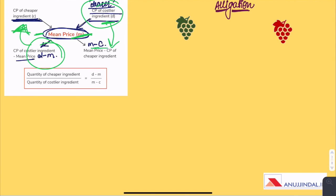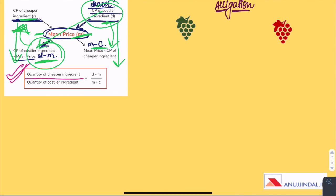Don't confuse it — we are writing D-M below the cheaper side and M-C below the costlier side. So D-M is the ratio of the cheaper ingredient and M-C is the ratio of the costlier ingredient. In formula format: quantity of cheaper ingredient is to quantity of costly ingredient equals D-M is to M-C.